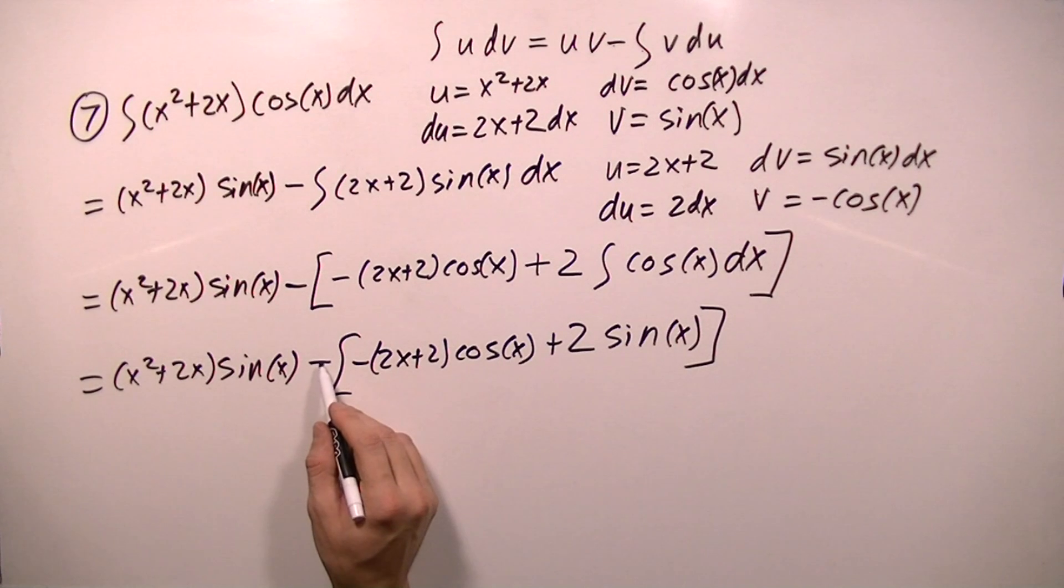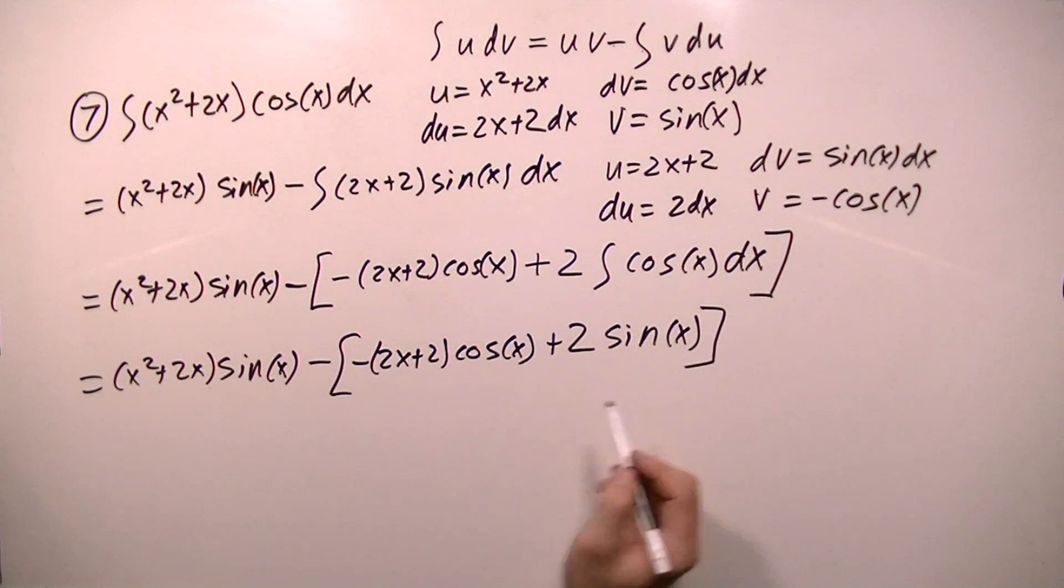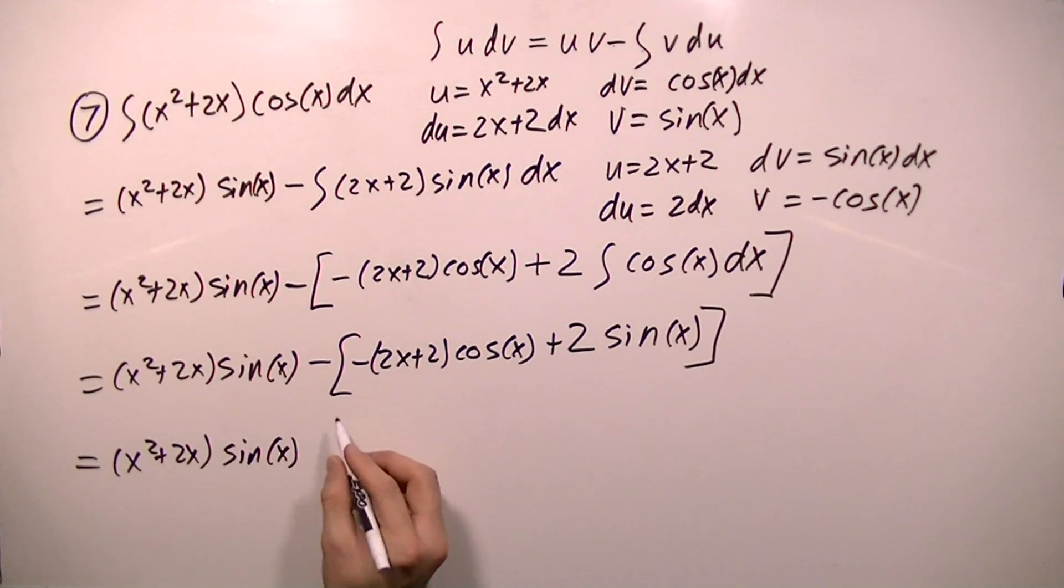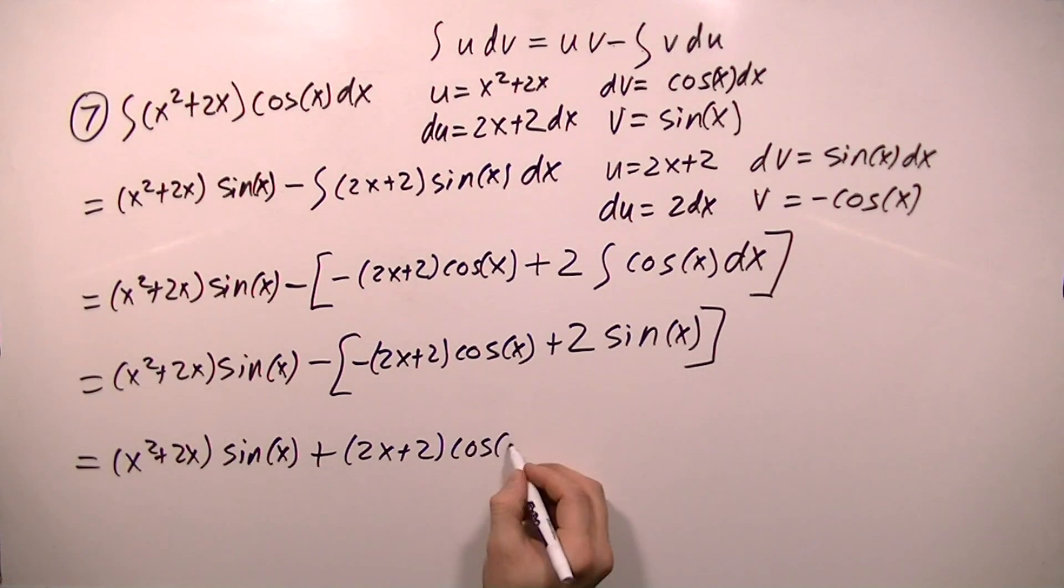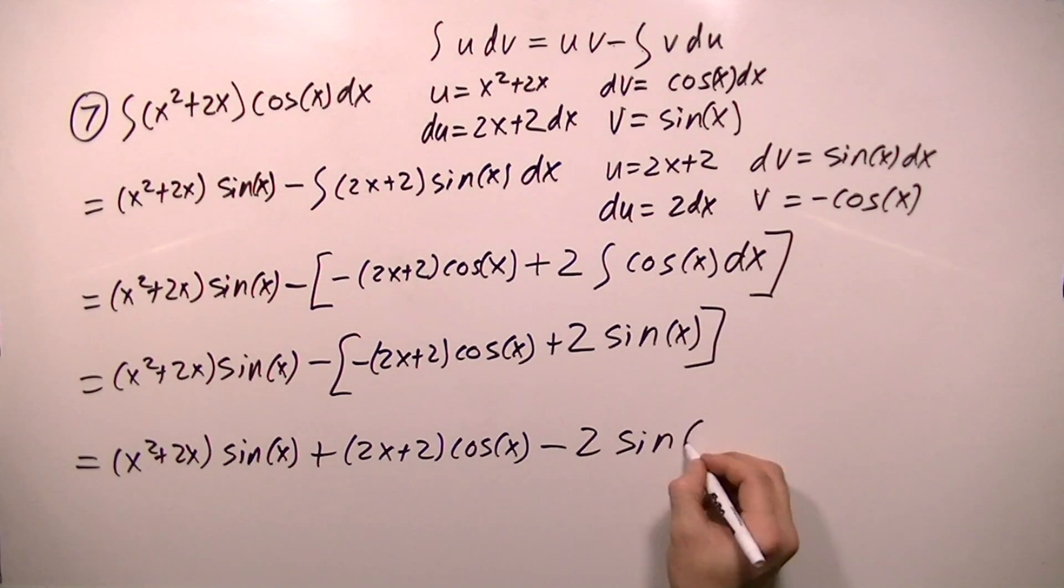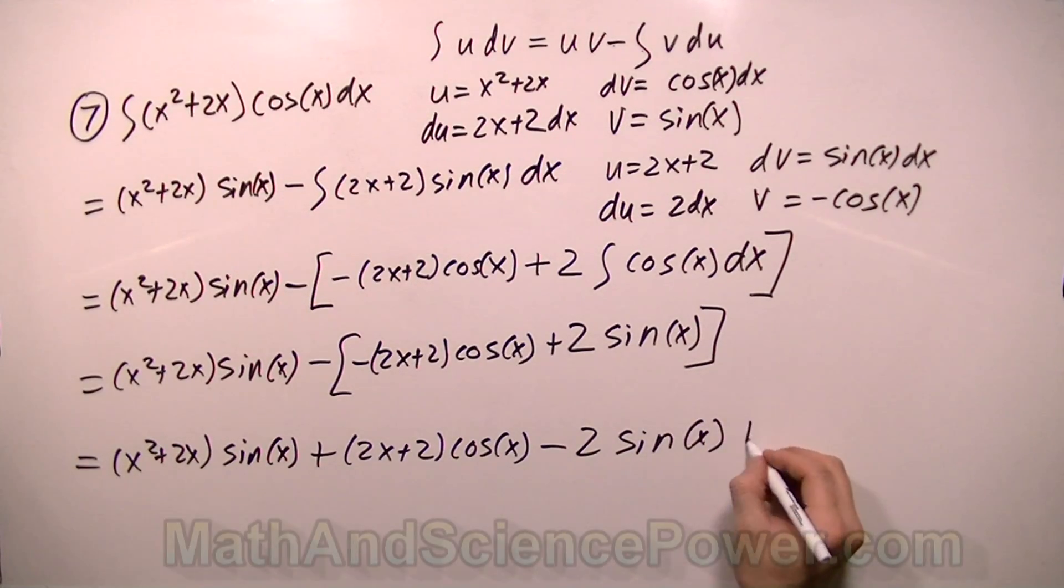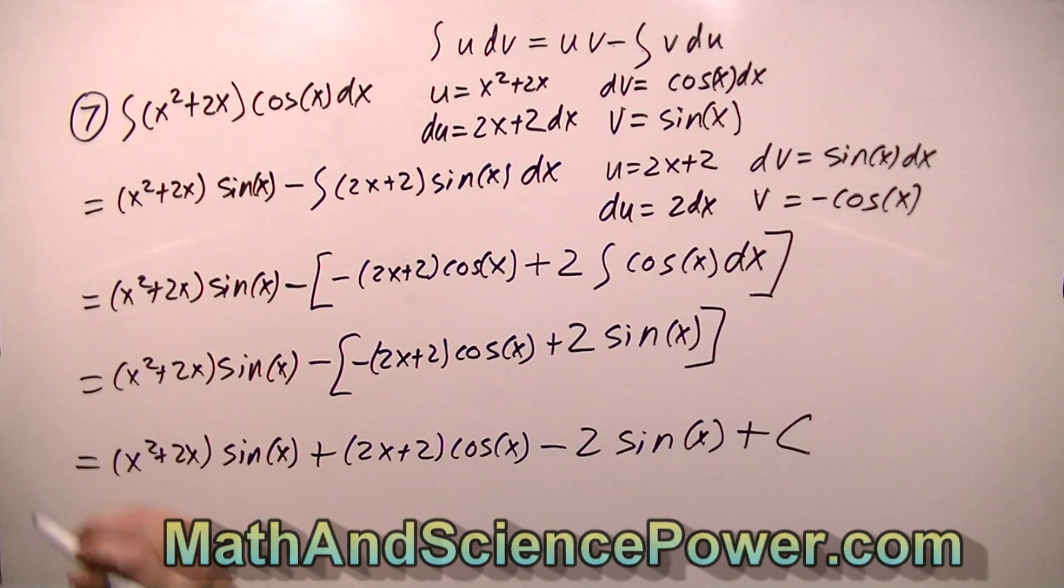And now all I have to do is distribute this negative into these brackets. So I get equals x squared plus 2x, sine x, and this negative times this negative makes it a positive. 2x plus 2, cosine x, and this negative times this positive makes this negative 2, sine x. And we can't forget to add the c here because we were taking an indefinite integral. And it doesn't look like there's any other simplifications I can do here, so this looks like that's about as good as it's going to get.